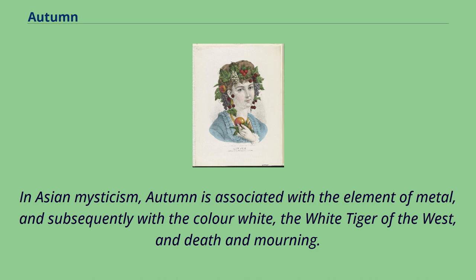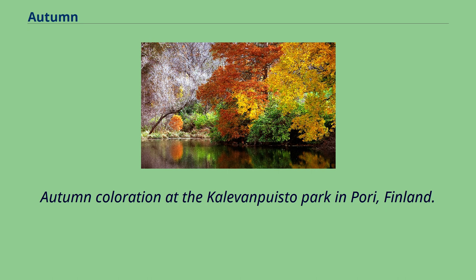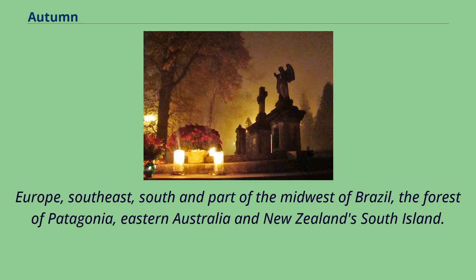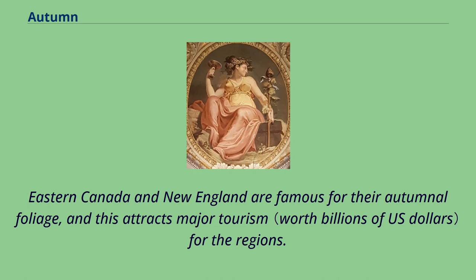Although color change in leaves occurs wherever deciduous trees are found, colored autumn foliage is noted in various regions of the world: most of North America, Eastern Asia, Europe, Southeast and South America, part of the Midwest of Brazil, the Forest of Patagonia, Eastern Australia, and New Zealand's South Island. Eastern Canada and New England are famous for their autumnal foliage, and this attracts major tourism for the regions.